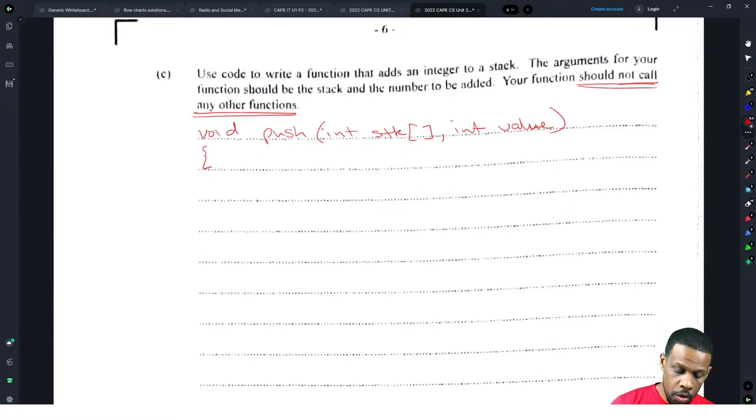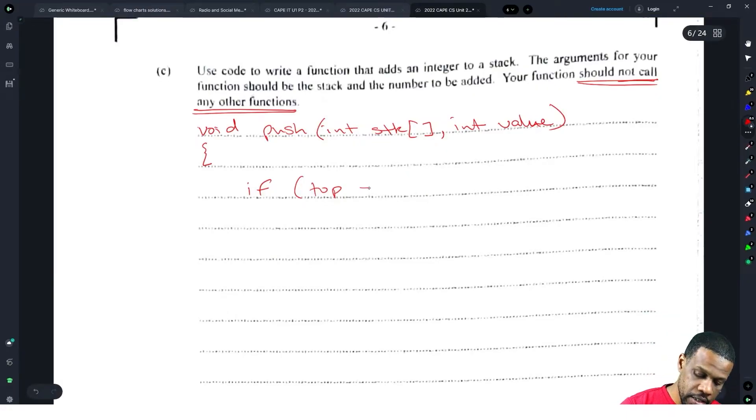What we want to do? We want to push the value. Let's check to make sure the stack is not full. So if top is equal to max, we're assuming that it has a max, right? They told us clearly don't call any other function, so we had to assume that our max was set. So if top is equal to max, then we will... we will do this... no, we will print, print f, print f the stack is full.